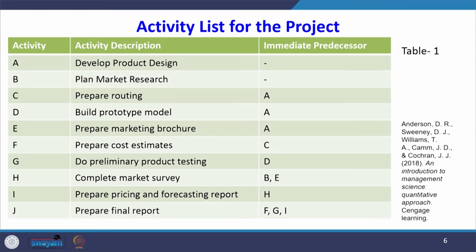The question to be answered is: how long will it take to complete this feasibility study? To complete the feasibility study, the activity list is given — activities A, B, C, D up to J — there are 10 activities total.